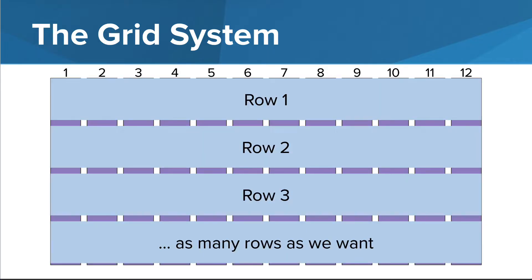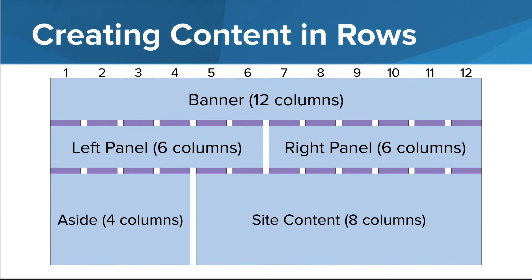Now we can add rows to our grid, and we can add as many rows as we want. Using the rows and columns of the grid, we can define sections on a web page. In this example, we have a banner for the first row that extends across all 12 columns. Then we have a left and right panel in the second row that extend across 6 columns each. And lastly, in the third row, we have an aside that is 4 columns wide, and a section for the site content that is 8 columns wide.